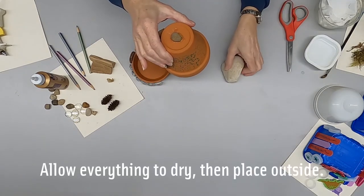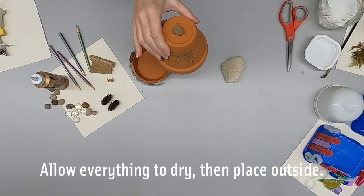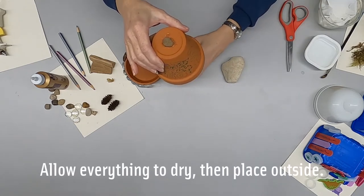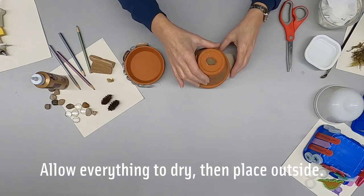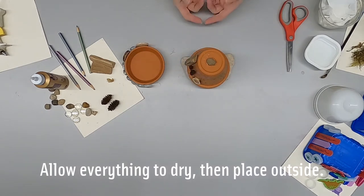Once it's dry and ready to go outside, you want to place your clay pot on two or three stones to raise it up off the ground. That makes a doorway for your toad to enter and to exit.